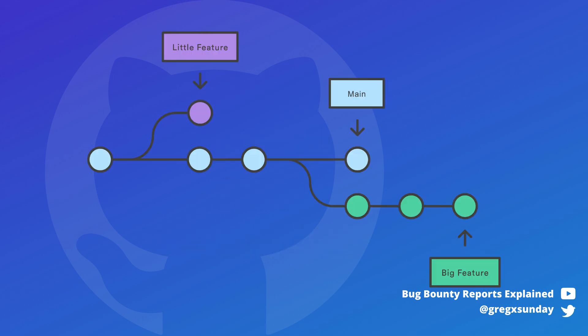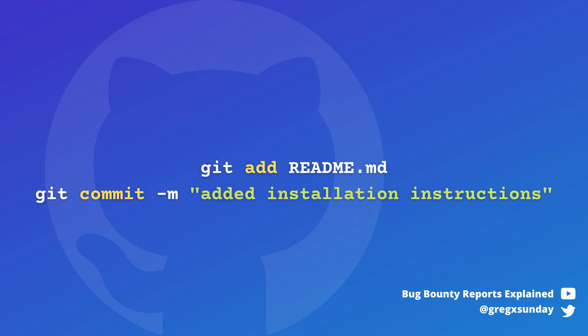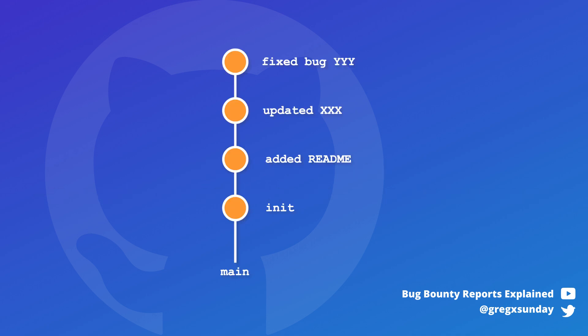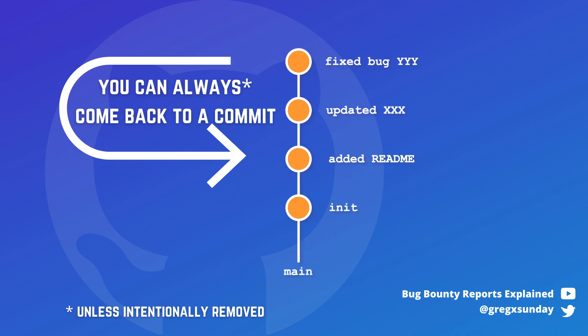Git is a version control system. It allows developers to work on a project together simultaneously by synchronizing changes between them. After creating some code, a developer creates a commit — it's a snapshot of the project after their changes. Even if developers start adding more code on top of this, this commit will always stay there and you will be able to come back to it.